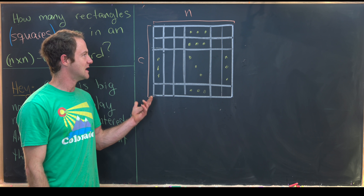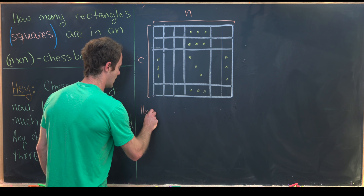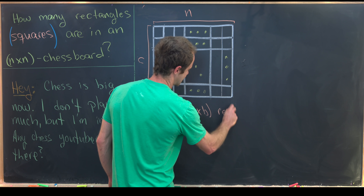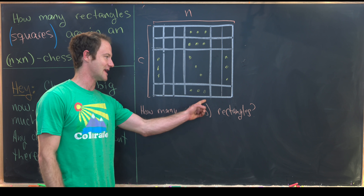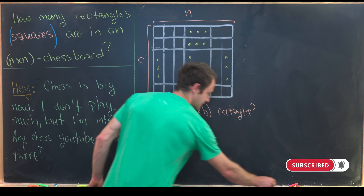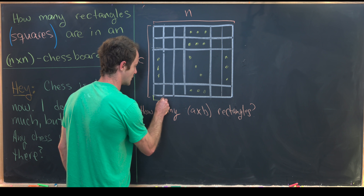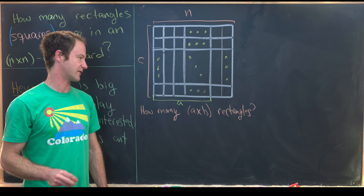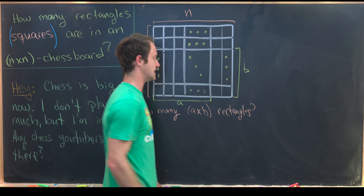Instead of jumping right into the question of how many total rectangles there are, let's look at the question of how many rectangles of a certain size there are. So we'll look at a by b rectangles — meaning they are a units in width and b units in height. An a by b rectangle starts at one end and goes for a total of a squares in one direction and b squares in the other.